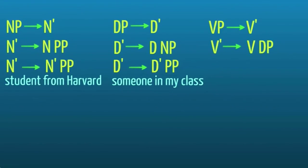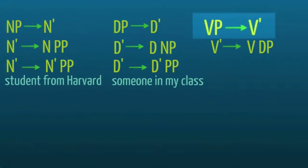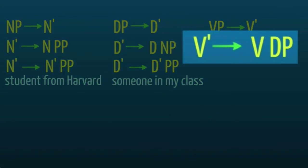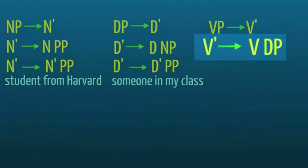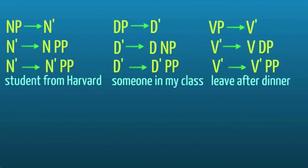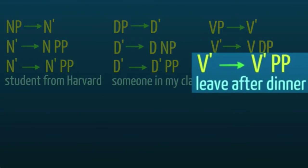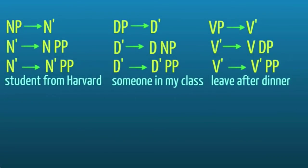A verb phrase similarly minimally consists of a V bar and a V bar with its head, possibly with a complement, which is typically a DP. But it can also have an adjunct like after dinner, in which case there is another V bar followed by a PP.